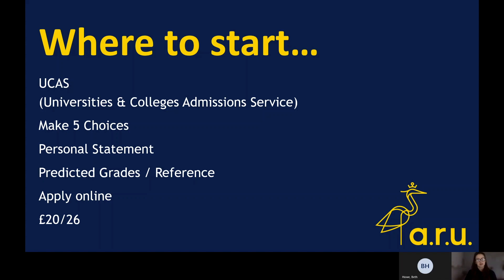On your UCAS application you can make up to five choices. In addition to that, you will write one personal statement which will support all of those choices that you make. You will also be asked to provide your predicted grades and to submit a reference alongside the application, which will allow universities to get a better understanding of what grades you are expected to achieve in August.